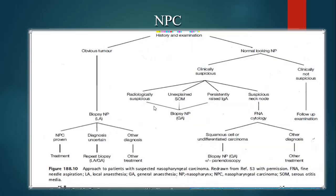This flow sheet shows the evaluation algorithm for nasopharyngeal carcinoma. After history and examination, if there is an obvious tumor, biopsy should be done. If NPC is proven, proceed to treatment. If diagnosis is uncertain, repeat biopsy. If not NPC, start other treatment. If the nasopharynx looks normal but clinical suspicion is high, biopsy should still be done. On FNAC, if squamous cell carcinoma or undifferentiated carcinoma is found, biopsy of the nasopharynx should be done. If another diagnosis is found, treat for that specific nasopharyngeal malignancy.